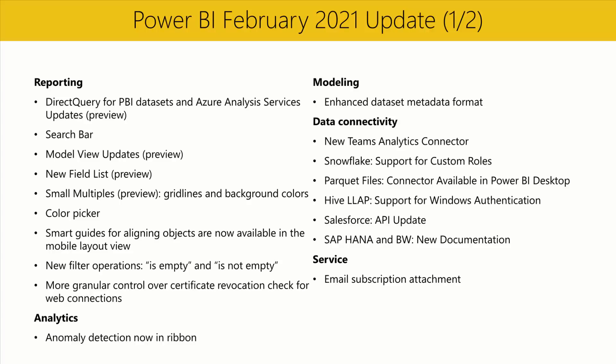In the filter pane, we've added two new filter operations: is empty and is not empty. You can find these new operations in the advanced filtering filter type. The operation 'is empty' shows items when the value is an empty string, and 'is not empty' shows items when the value is not an empty string. Keep in mind that text values with only spaces are automatically converted to empty strings, and that these operations are for empty string values — for null values, use the 'is blank' and 'is not blank' operations instead.